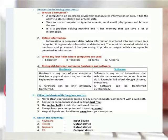Software is any set of instructions that tells the hardware what to do and how to do it. Examples: MS Word, Google Chrome, Photoshop. The software can be transferred electronically.